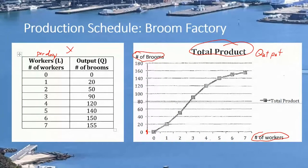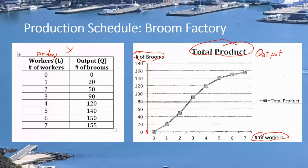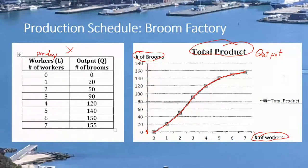We might be using hours instead of days, or months instead of days, so you have to be conscious constantly of what we're graphing. If we plot this schedule, it rises up and continually increases as we increase the number of workers on the horizontal axis. But it's got curvature to it, and that curvature is going to correspond to our definitions of returns to scale of production.